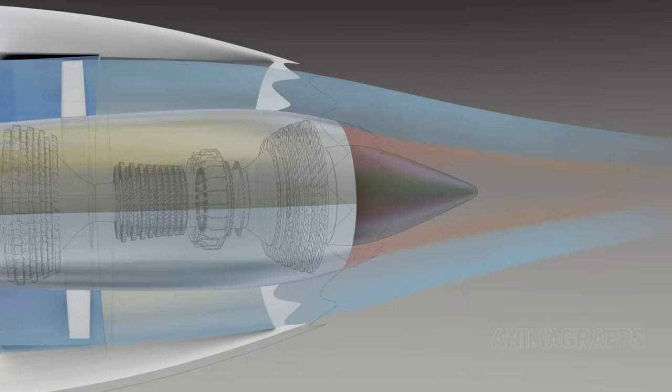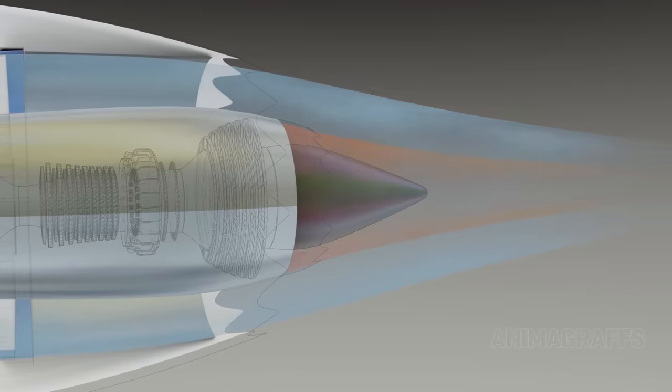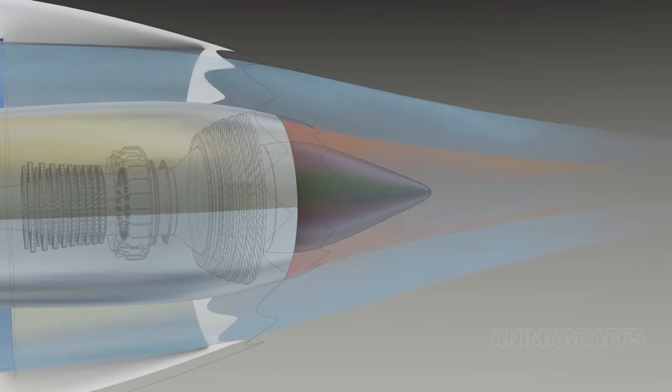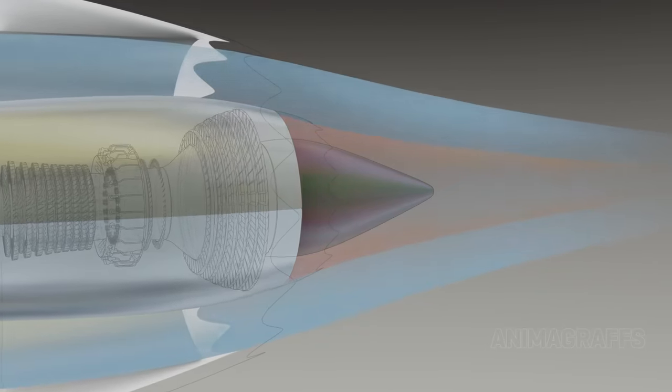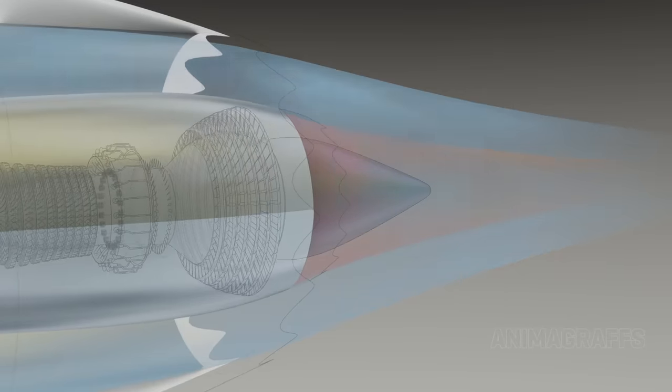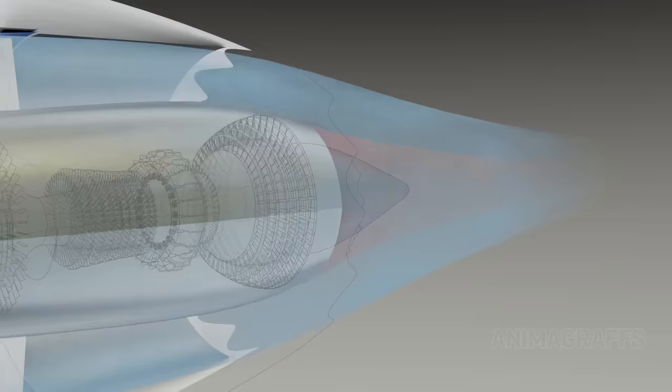Exhaust velocity is a major factor in jet engine noise. High bypass engines surround fast-moving core exhaust with large quantities of slower-moving bypass air for quieter operation.